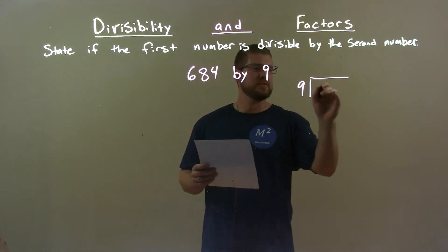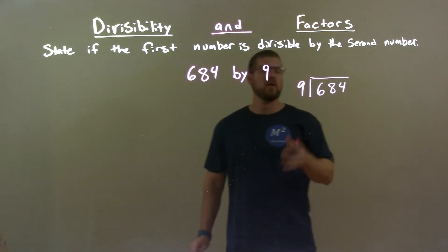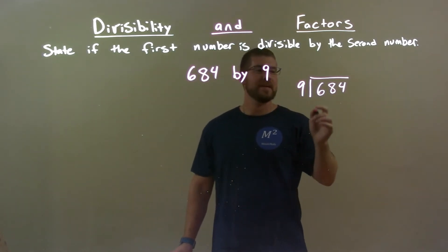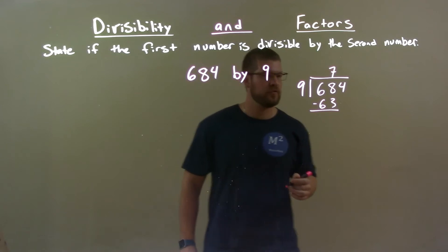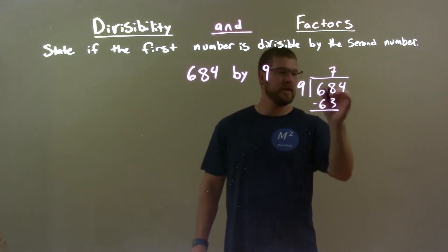So, 9 goes into 684. Does 9 go into 684? Well, 9 goes into 63 seven times. 7 times 9, 63. Then we subtract. 68 minus 63 is 5, and we bring down the 4.